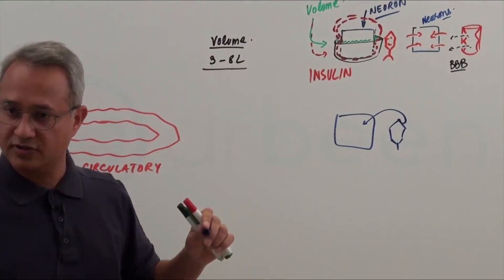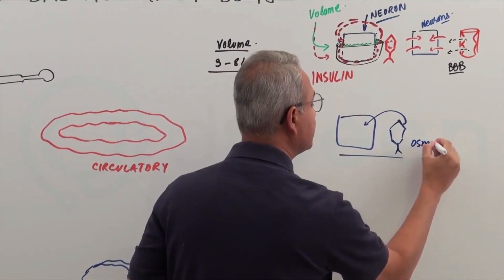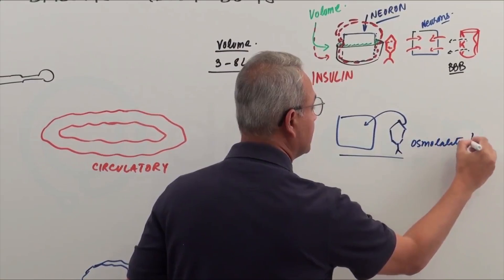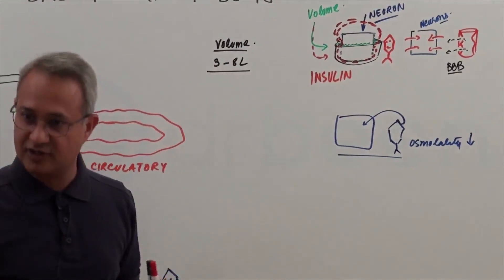Forget about neurons. When this moves in this cell, what would happen to the osmolality? Drop. This osmolality drop is universal in the body.